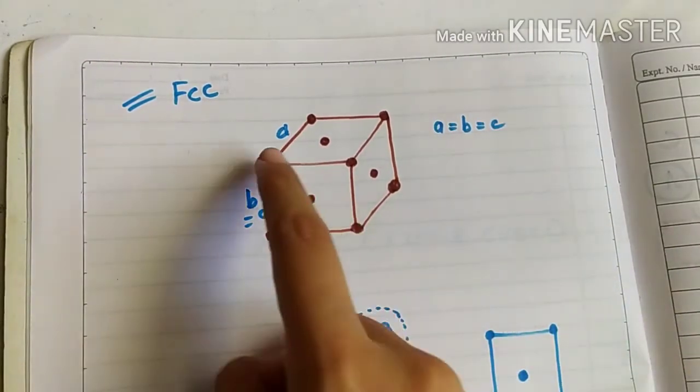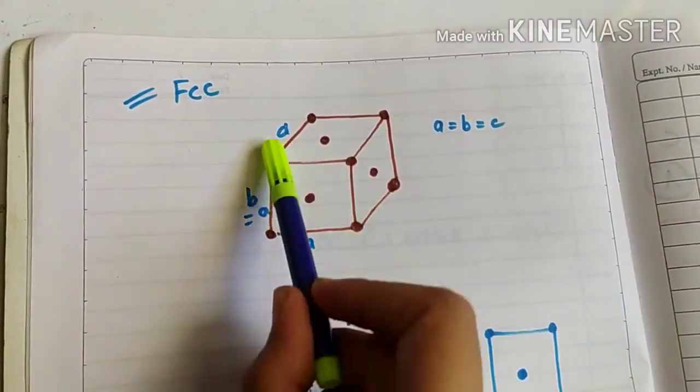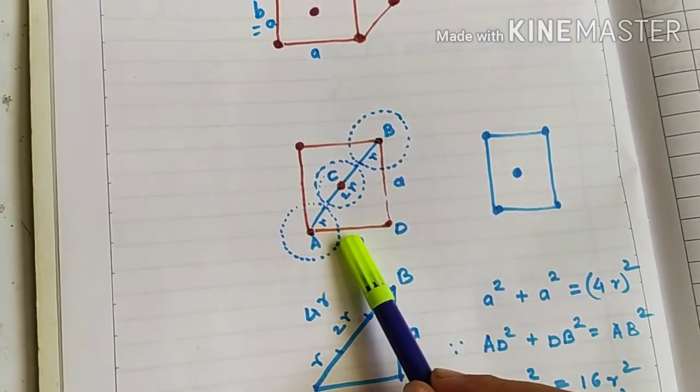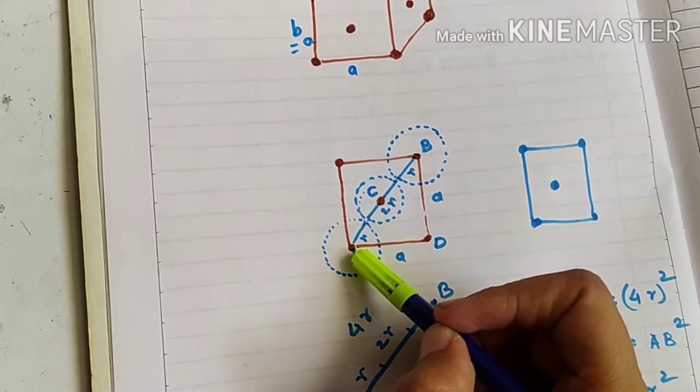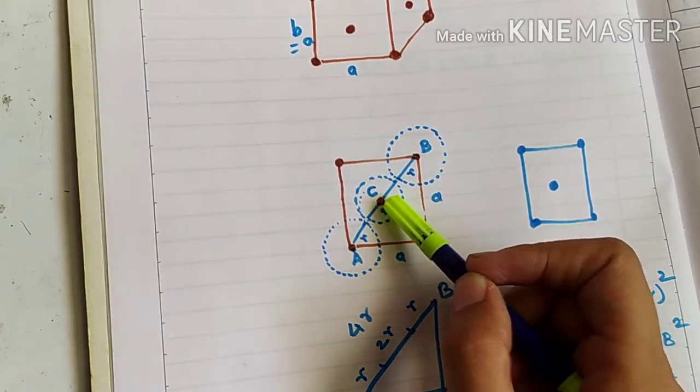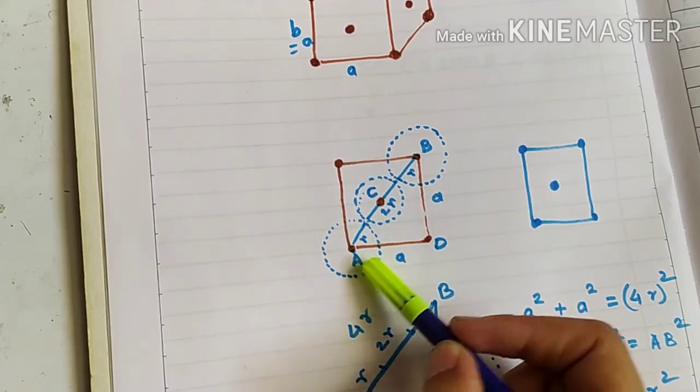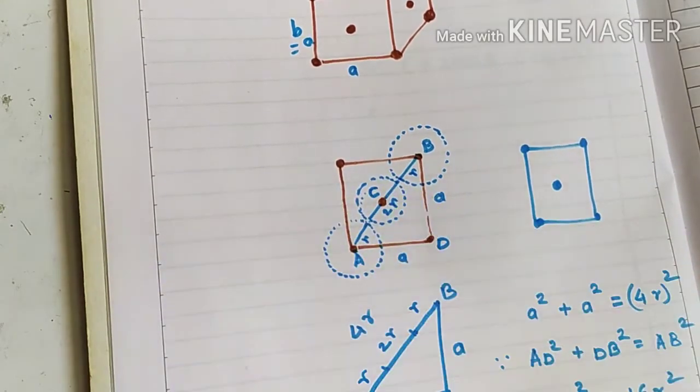Next what we'll do, we'll consider only the front face of this FCC structure. Let's consider only this front face. It looks kind of like this. So here we see, let's consider point a, point b and point c. So at lattice point a, it is surrounded by an atom. Lattice point b is surrounded by an atom and c is also surrounded by an atom.